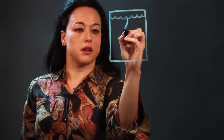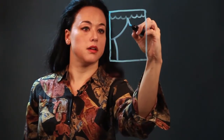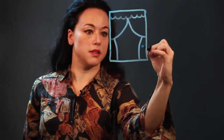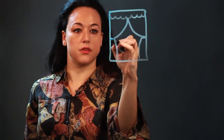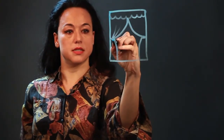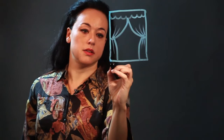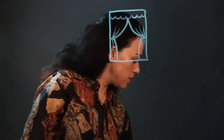And then I curve in one curtain like that, and put a little thing there for the tie-back. And then I draw in some creases to show the fabric is being gathered there. So that would be one kind of curtain.